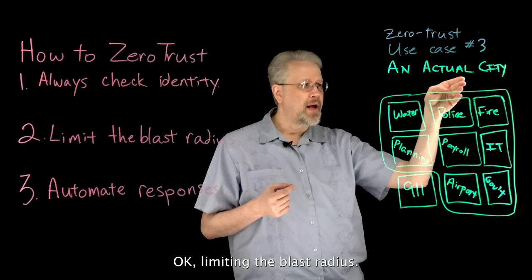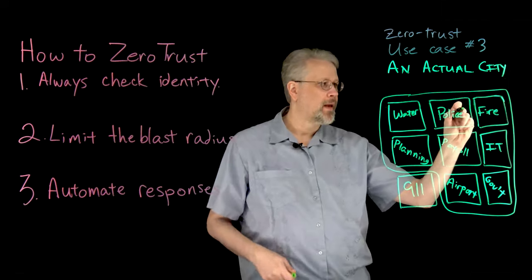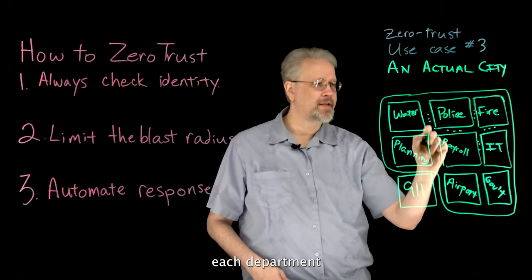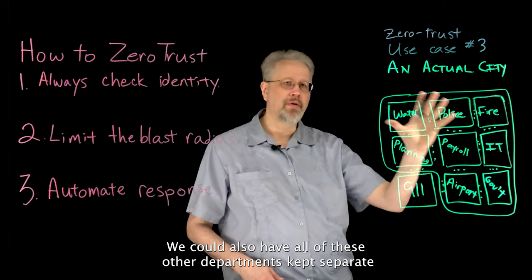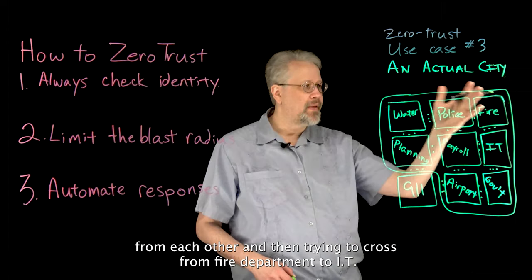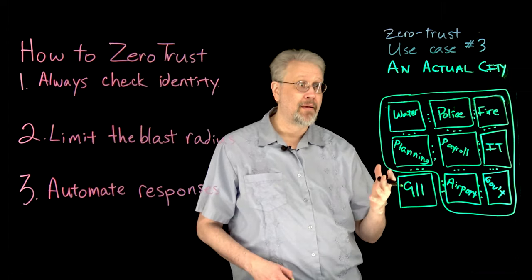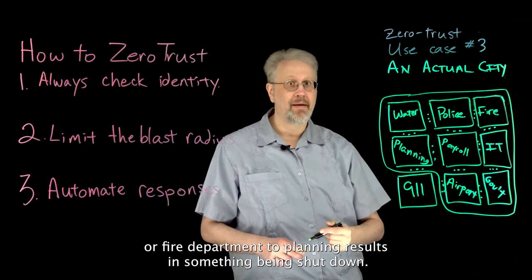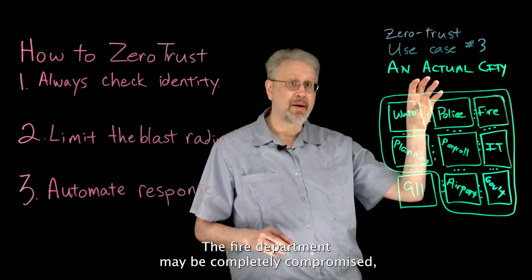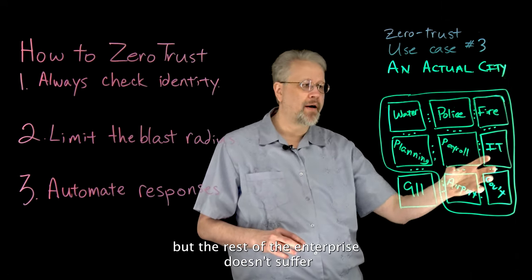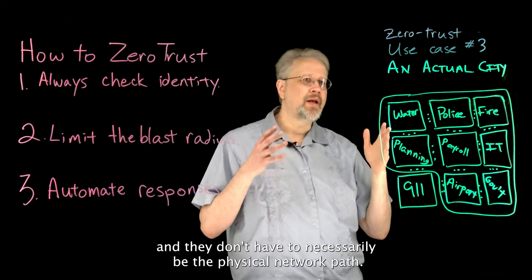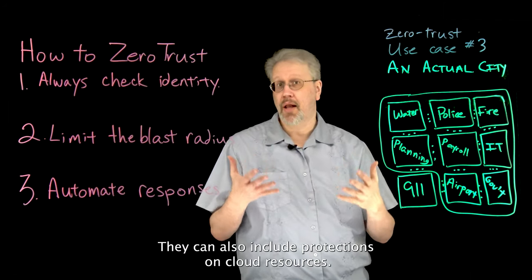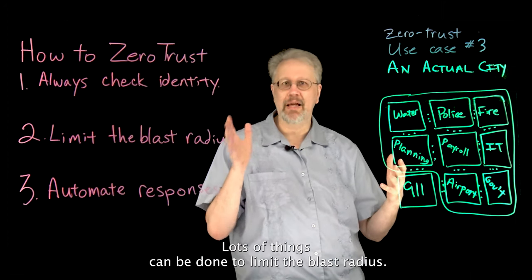Limiting the blast radius: if there's a firewall between each department — like we have 911 segregated — we could also have all these other departments kept separate from each other. Then trying to cross from the fire department to IT or from fire to planning results in something being shut down. The fire department may be completely compromised, but the rest of the enterprise doesn't suffer because we put protections between departments. And they don't have to be on the physical network path — they can also include protections on cloud resources. Lots of things can be done to limit the blast radius.